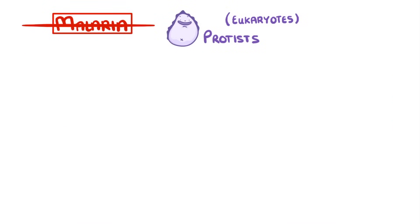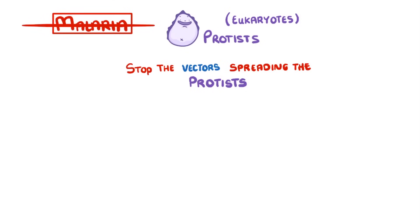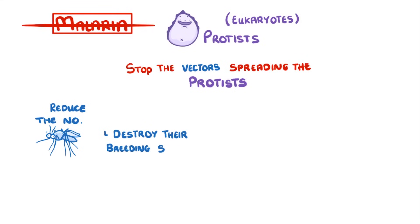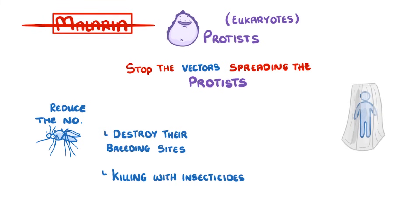The best way to prevent diseases like this is to stop the vectors from spreading the protists in the first place. For example, we could reduce the number of mosquitoes in the area by destroying their breeding sites or directly killing them with insecticides. Another option would be to stop them from feeding on us by using mosquito nets or mosquito repellents.